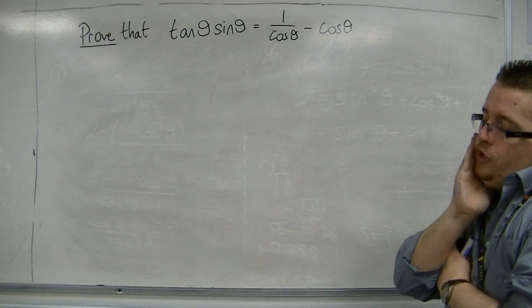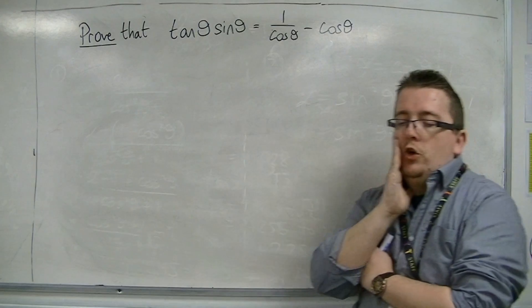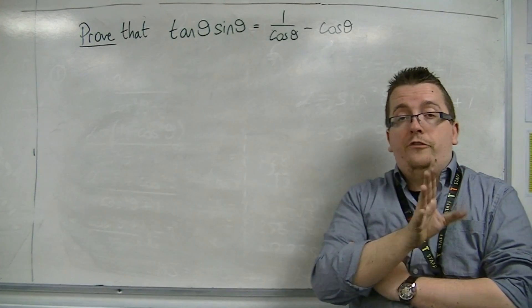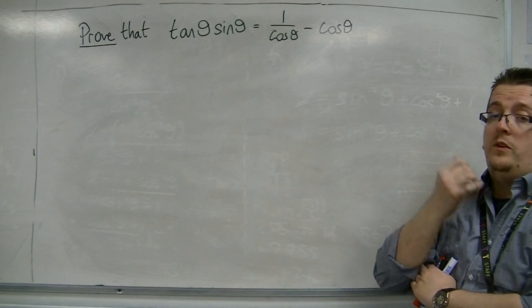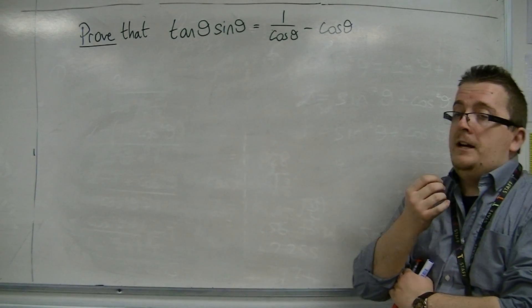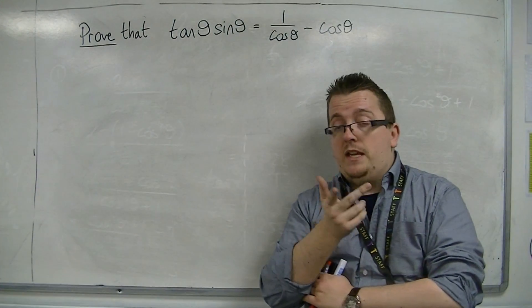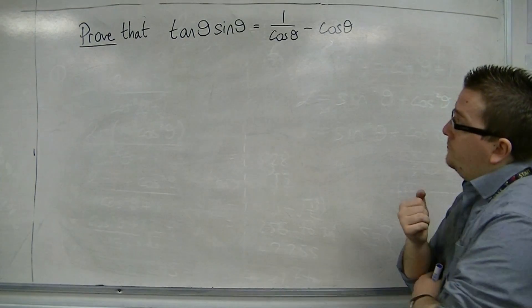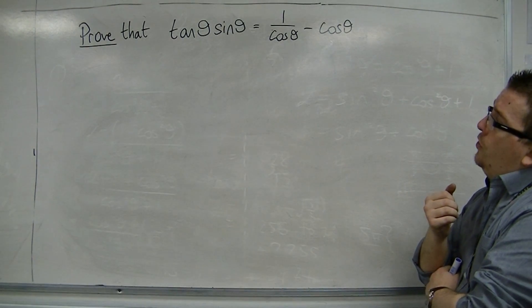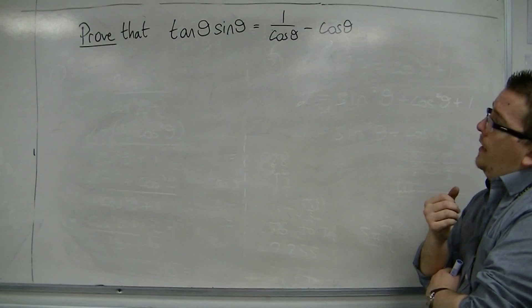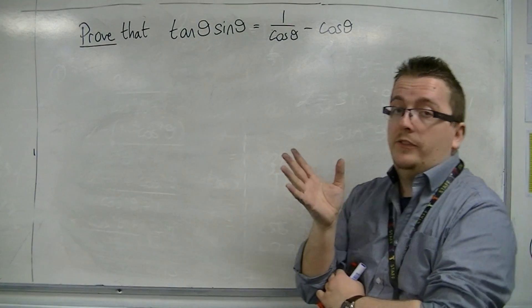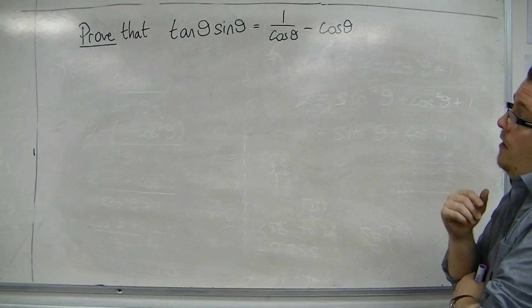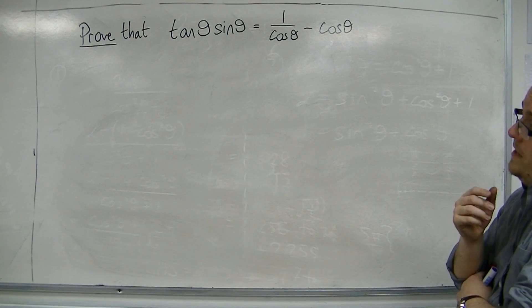We do have some options here. We could, like we did in the first example from the previous video, work from the left-hand side and show that it's equal to the right-hand side. That can be quite tricky in this example. You could work with the right-hand side and show it's equal to the left-hand side. That might be a little bit better, might be a little bit easier.